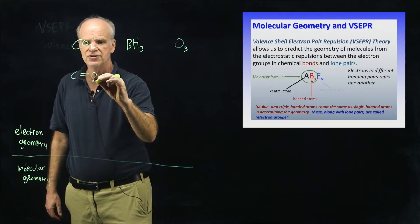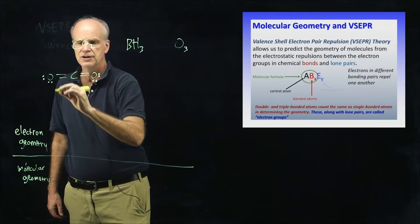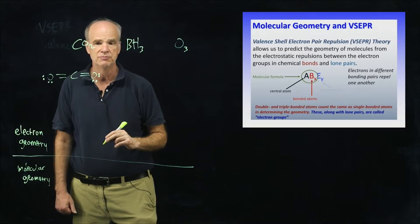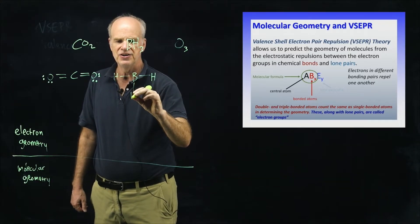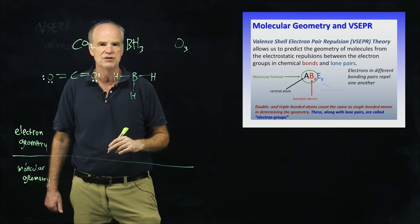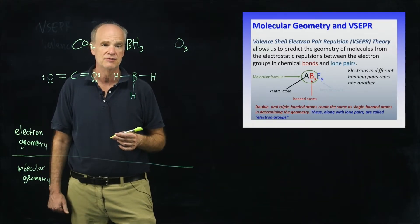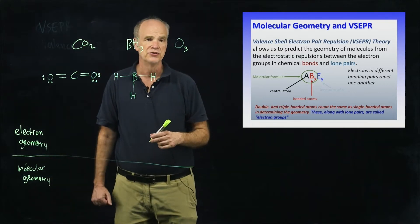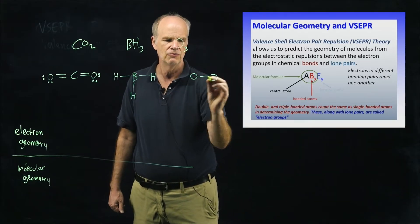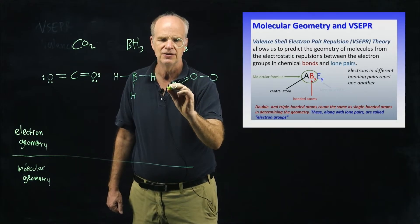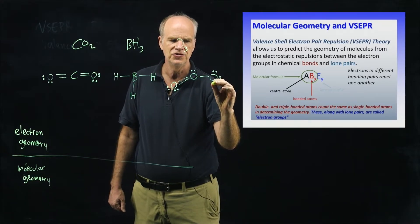Carbon dioxide has a central carbon with two sets of double bonds binding to oxygens, and those oxygens have lone pairs. Boron trihydride has a Lewis structure where boron doesn't have an octet — boron is in group 3 or group 13, and it can be happy with only six electrons. For ozone, there's a central oxygen atom with another oxygen on each side — one connected by a single bond, one by a double bond — with lone pairs around the oxygens.